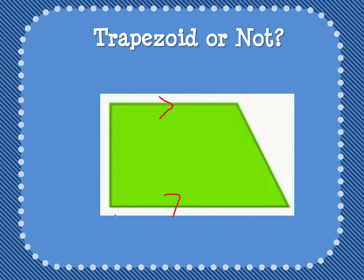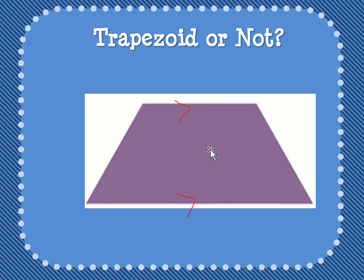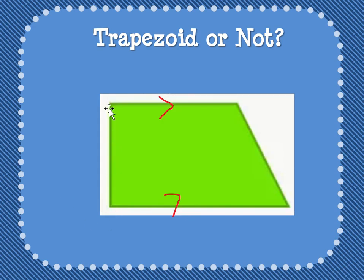These two at the top and the bottom, if they went on and on forever, they would never touch. This isn't what we're used to seeing for a trapezoid — the most traditional version has both sides slanted inward. Here we have one that goes straight up and there are actually some right angles in it. This is still a trapezoid.